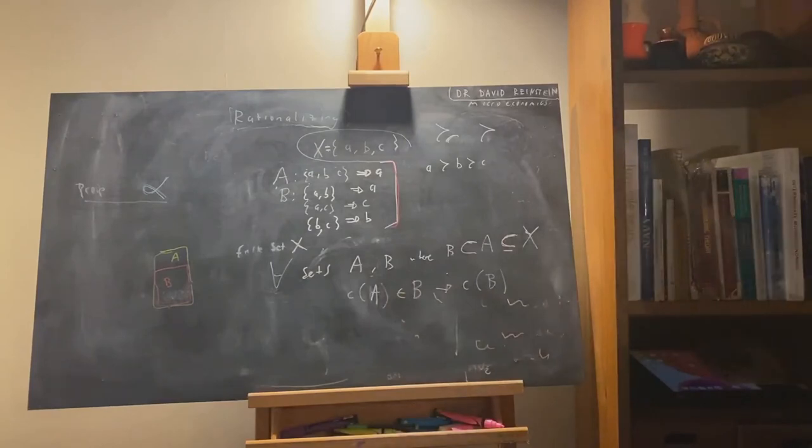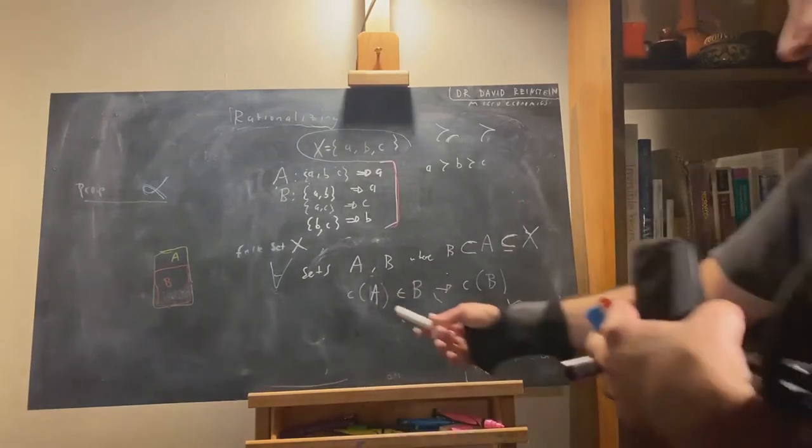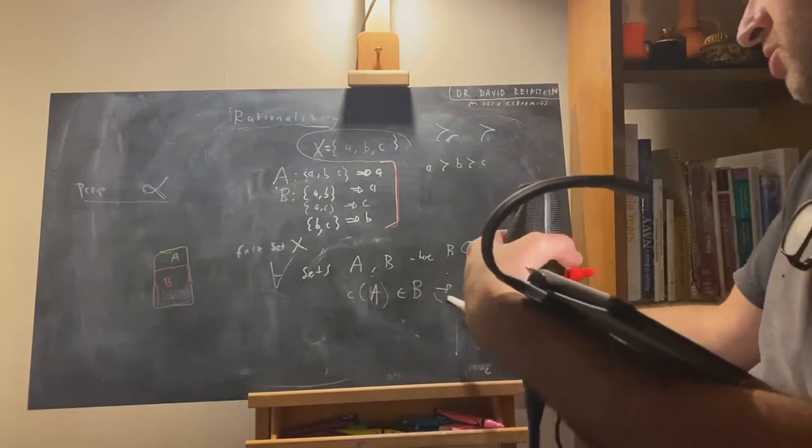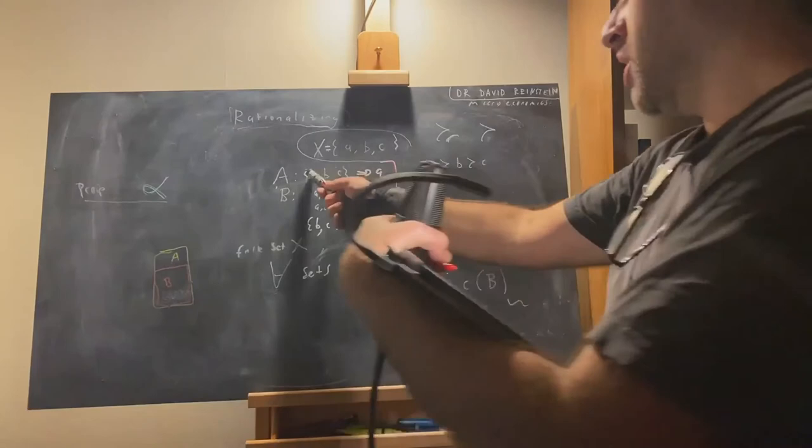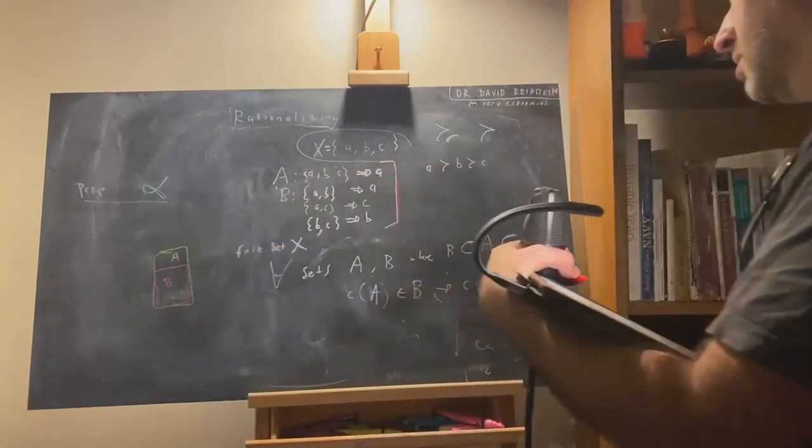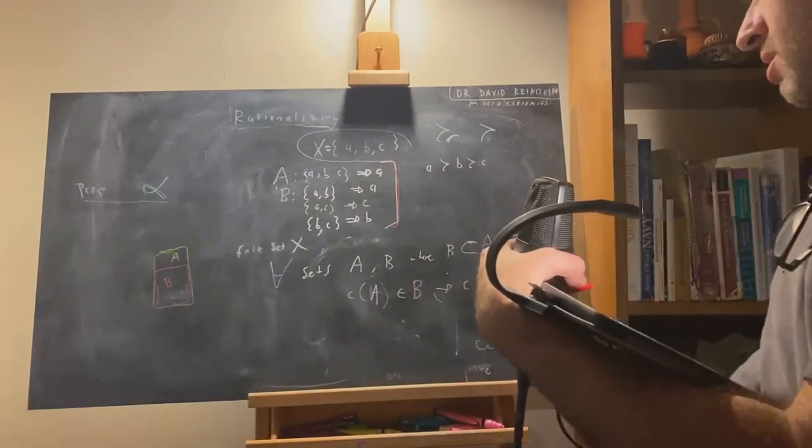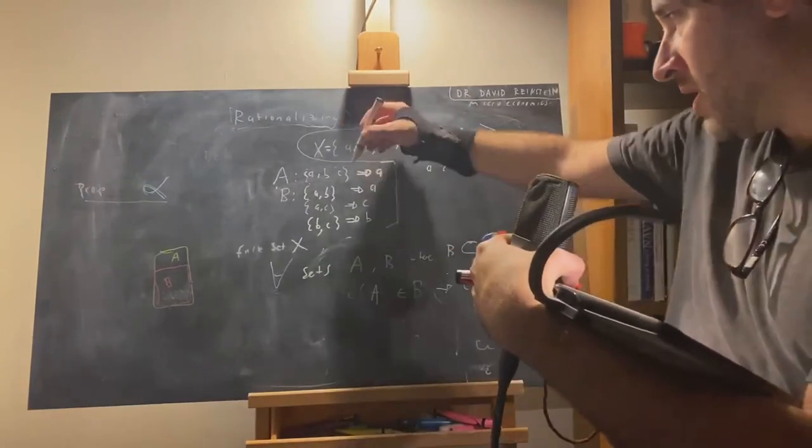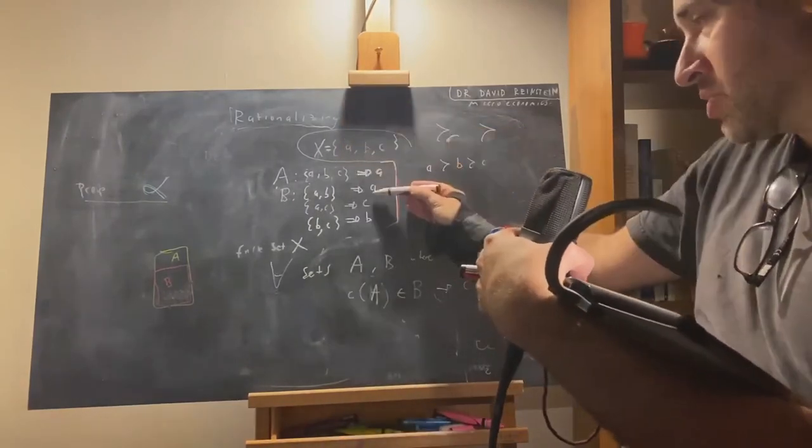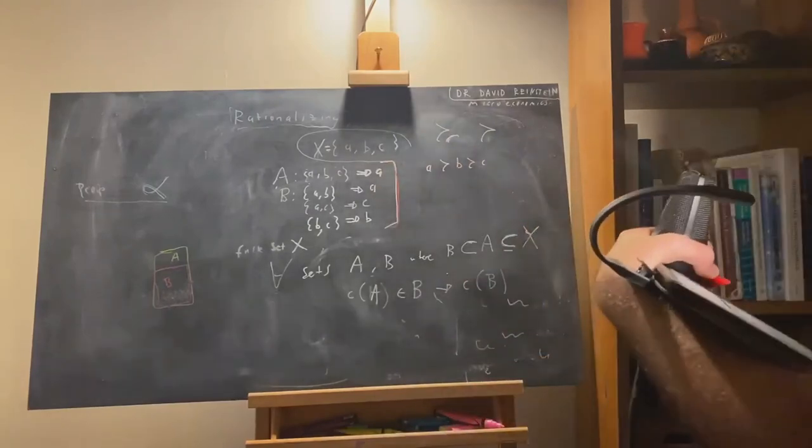In other words, if I take away an option that wasn't chosen in this larger set, my choice should not change. If I go from set ABC and I'm choosing A, when I take away option C, I better still choose A.